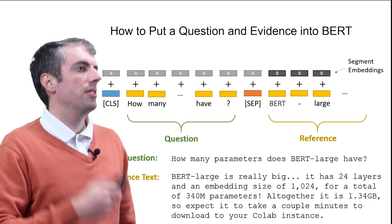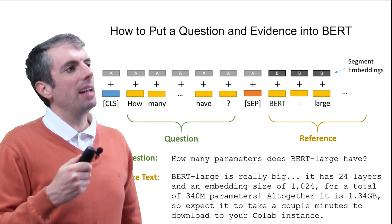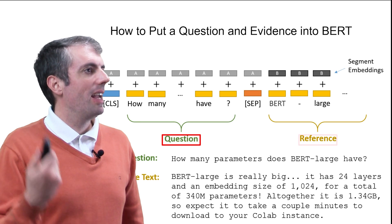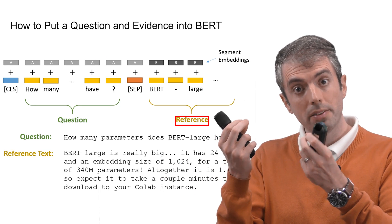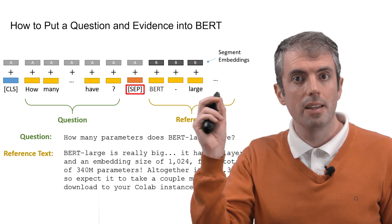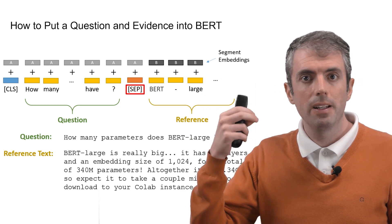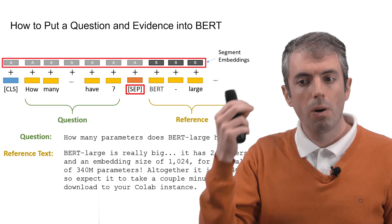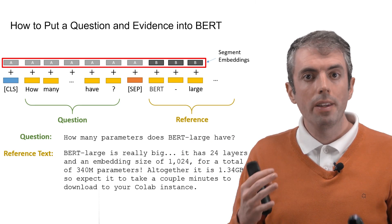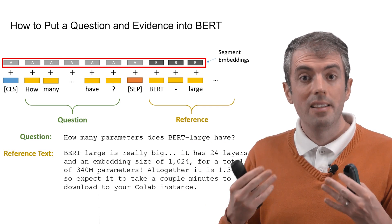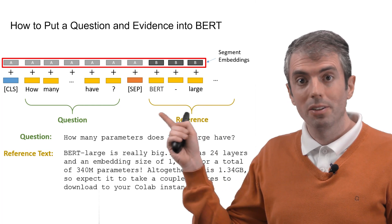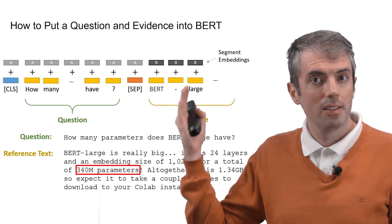Once you put a question into BERT, it doesn't look all that different from models like DrQA. You have a question and a reference. They're both inputs to BERT, so BERT needs to tell them apart somehow. So you put a special separator token in between them, and you also provide different segment embeddings for the question and reference strings. Recall that for reading comprehension, our goal is to use this input and then to highlight wherever the answer appears in the reference evidence.